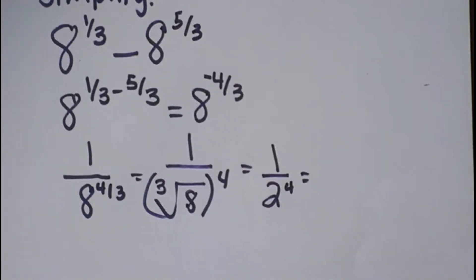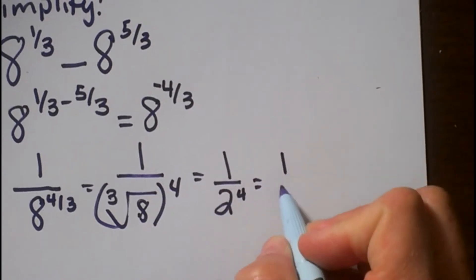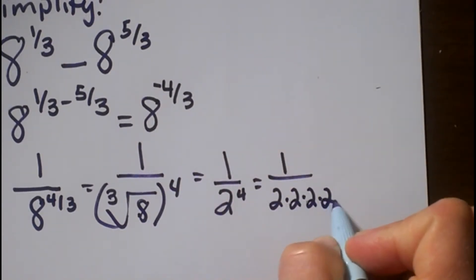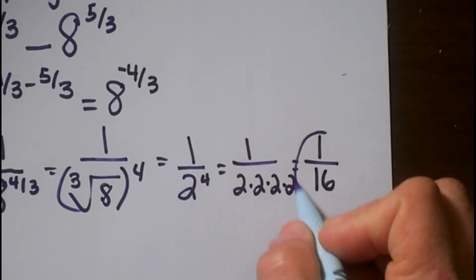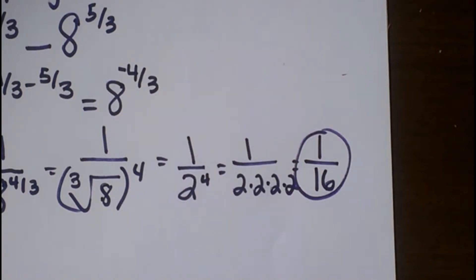Now 2 to the 4th means 2 times 2 times 2 times 2, which is 16. So the final answer is just 1/16, and that's how that simplifies.